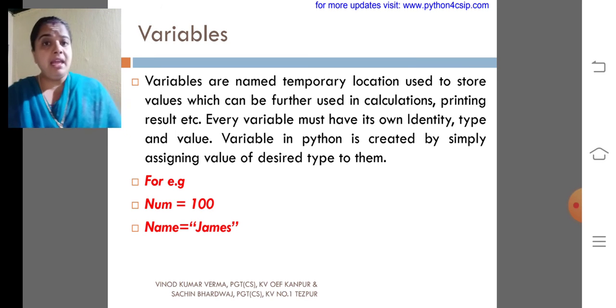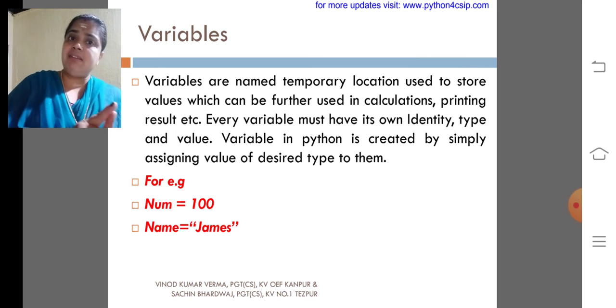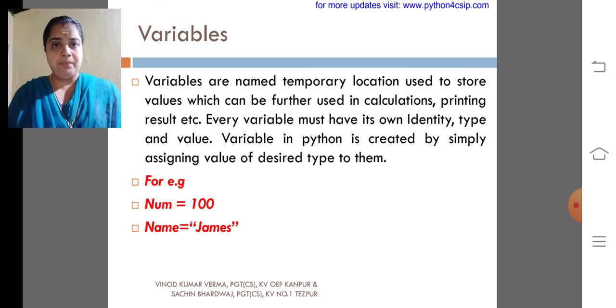So each and every variable has its own type and value. According to the value, we can say the type.